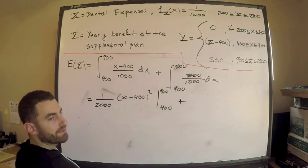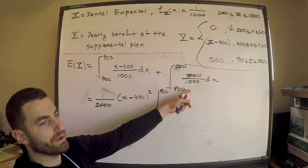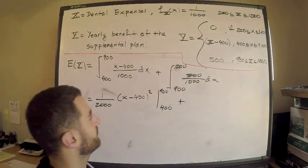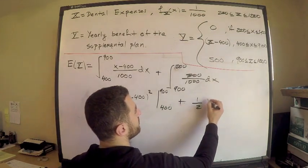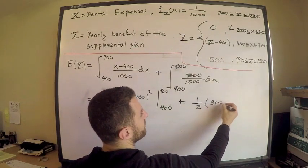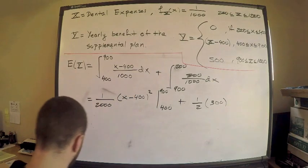Plus, now this 500 over 1000 to half, and I'm integrating 1, which means I'm going to take the length of the integral. So this is equal to 1 half times 300. 1200 minus 900 is 300. Like that. We're pretty much there.